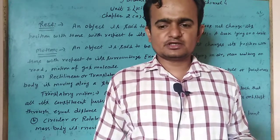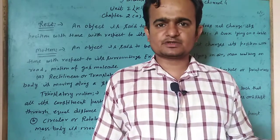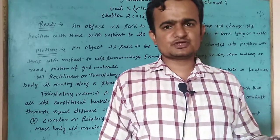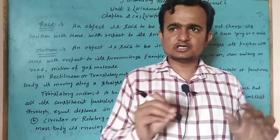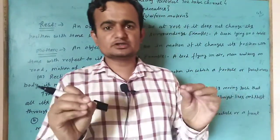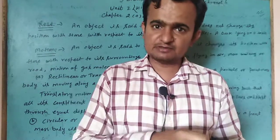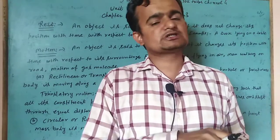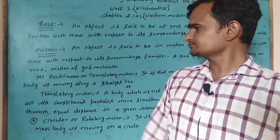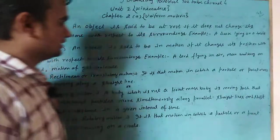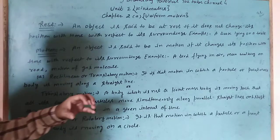A chair placed on the table, a box placed on the table — these are also examples of rest. It means the position of the object does not change with respect to time and with respect to its surroundings — that is called rest. Next part: motion. Motion क्या होता है — an object is said to be in motion if it changes its position with respect to time and with respect to its surroundings.